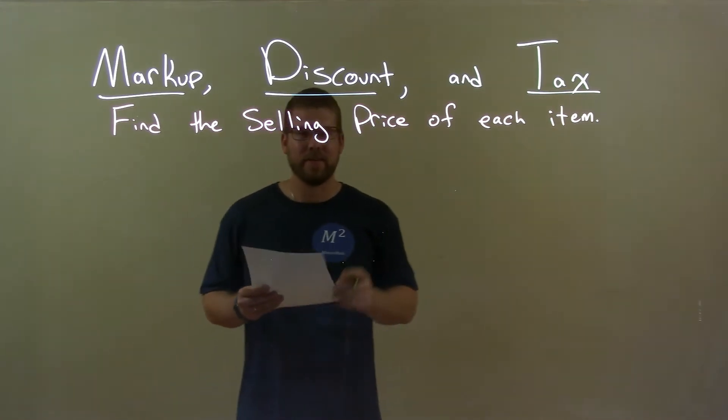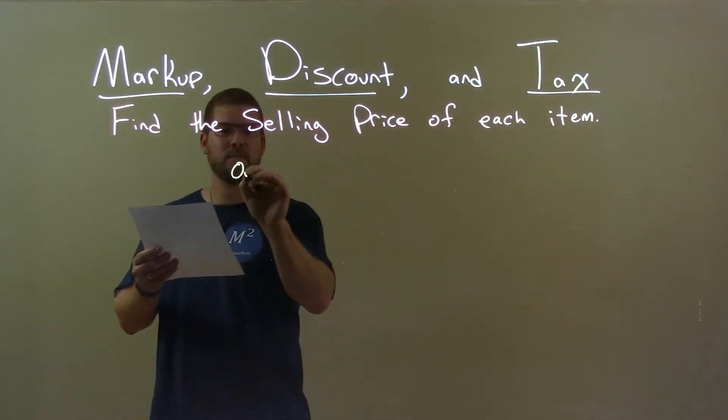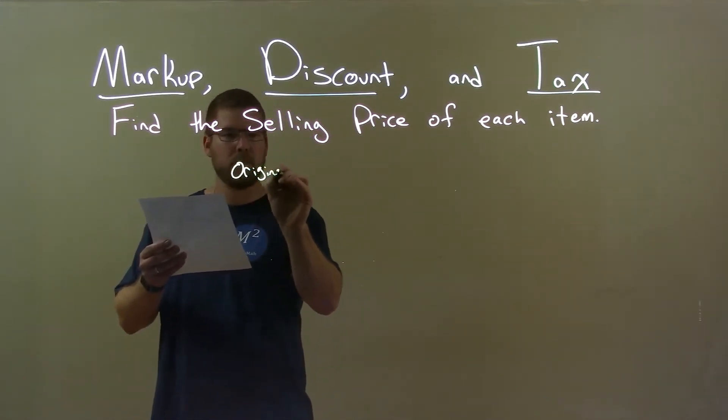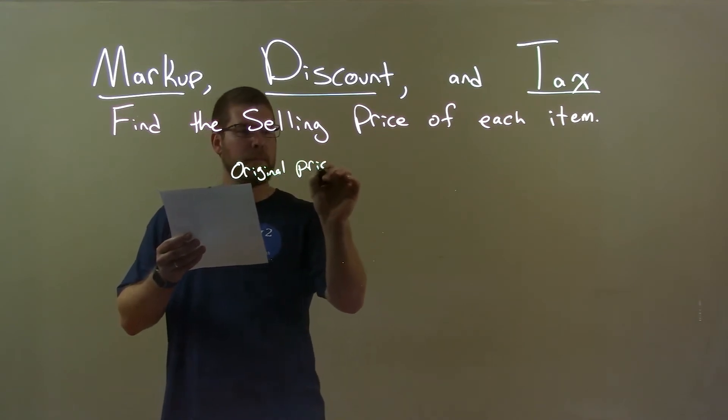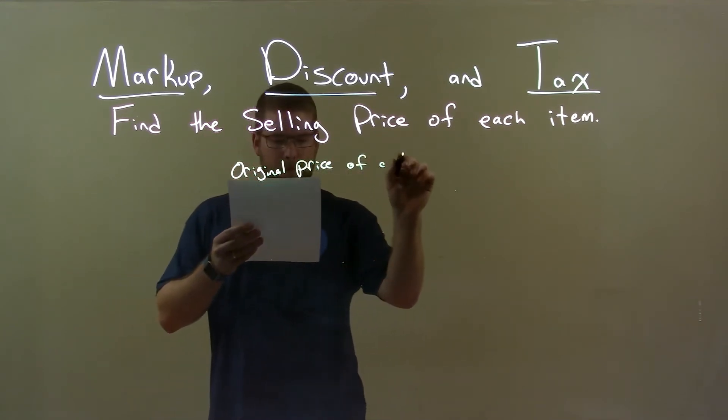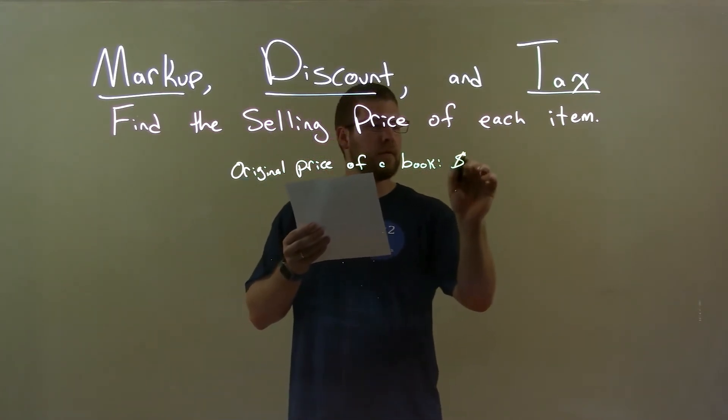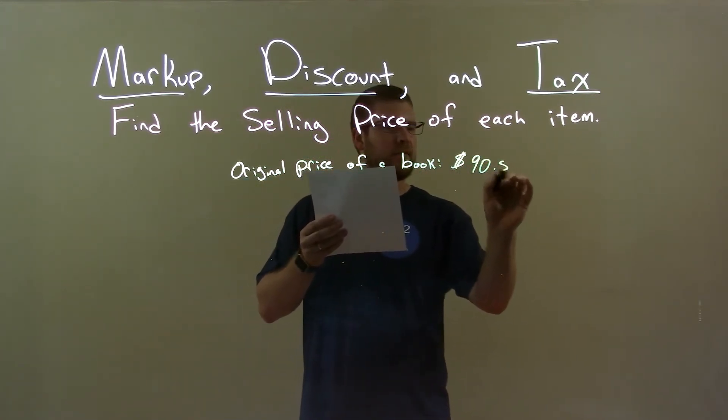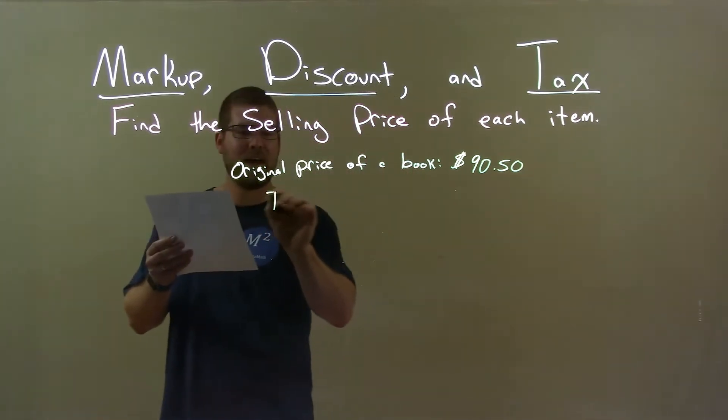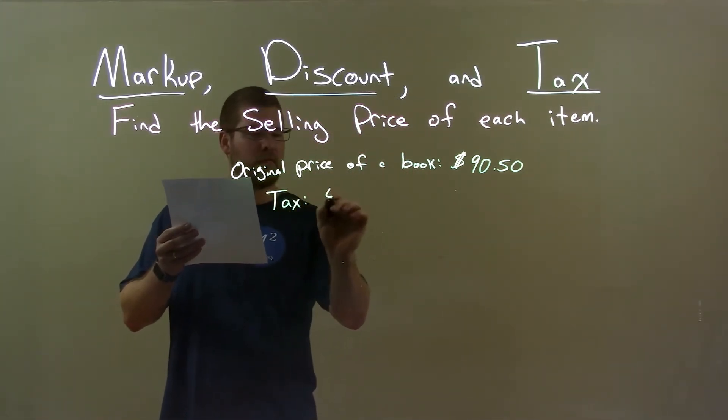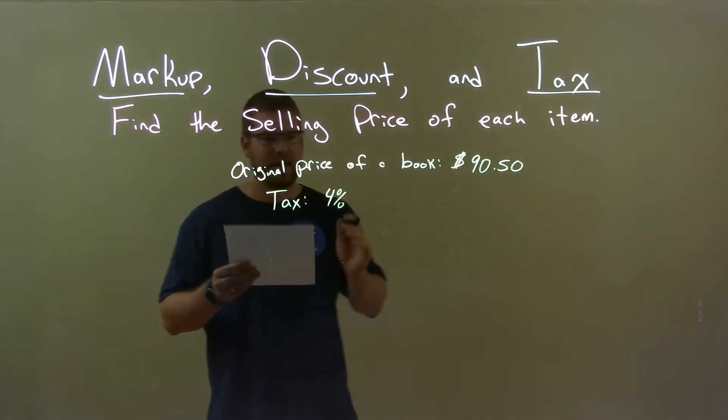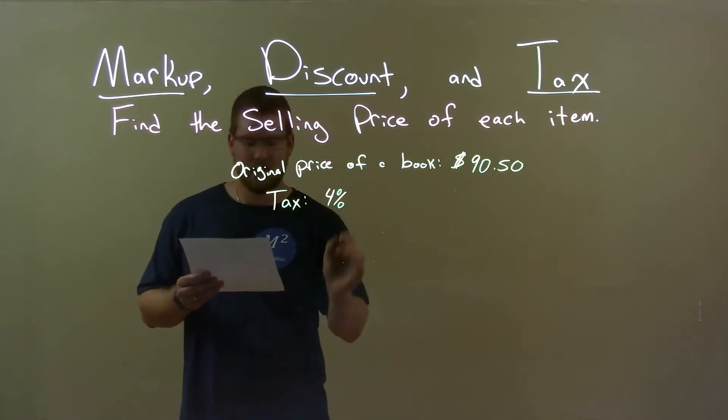So, if I was given this item, the original price of a book is $90.50 and its tax is 4%, okay? Its tax is 4% here, alright?